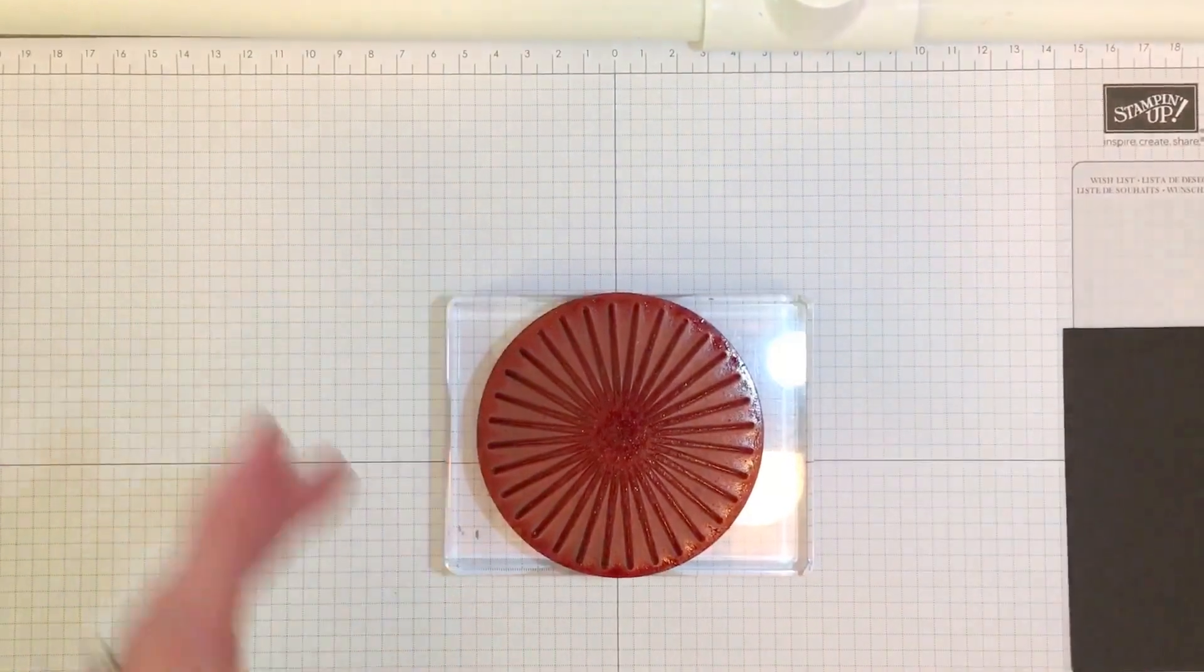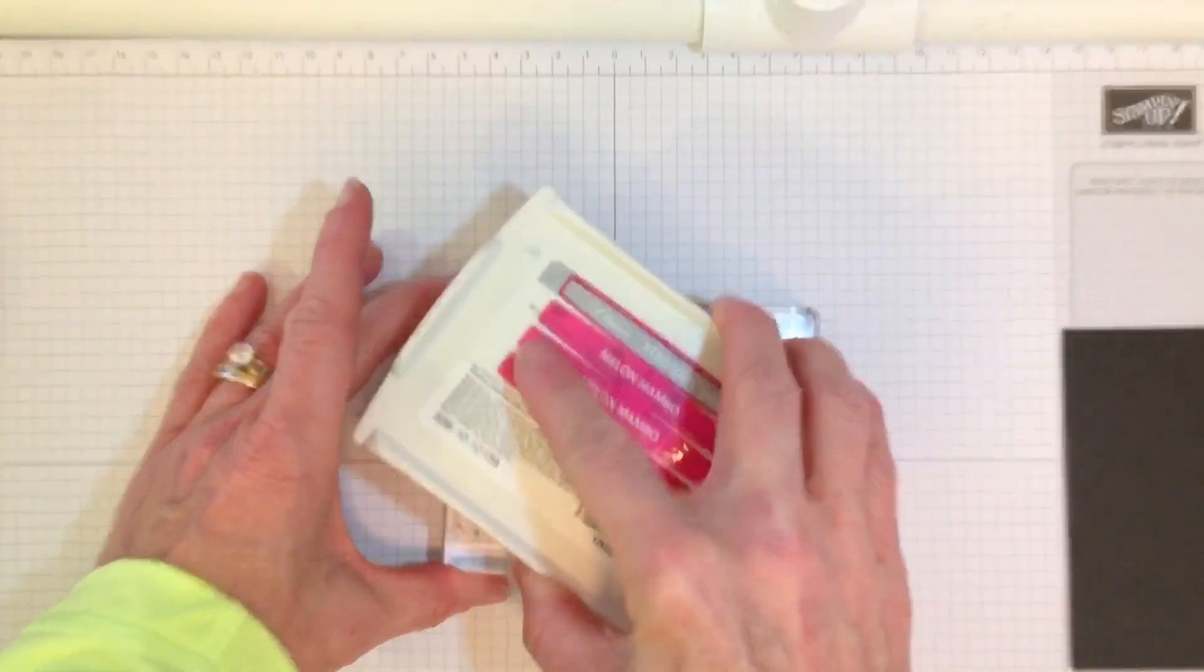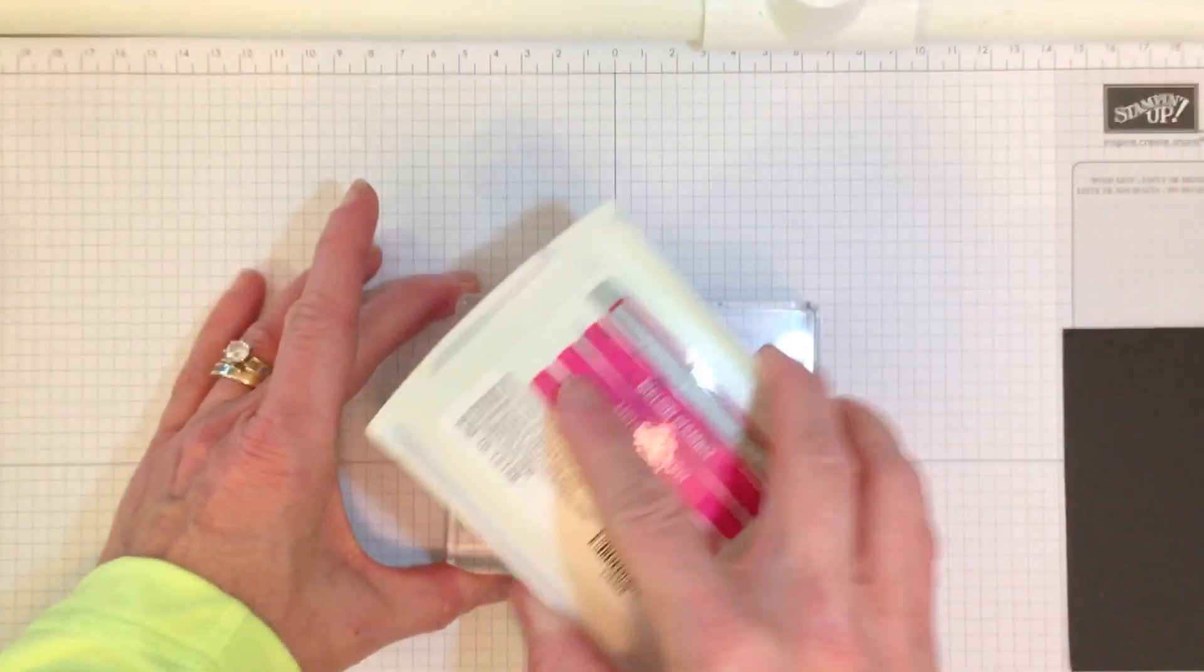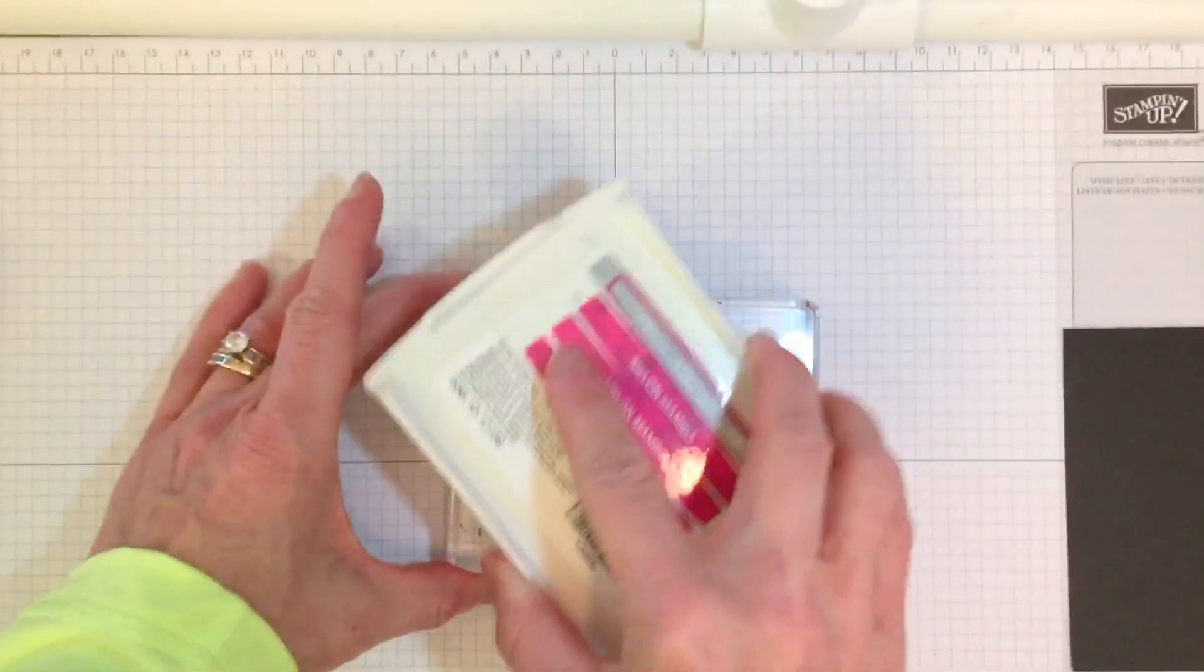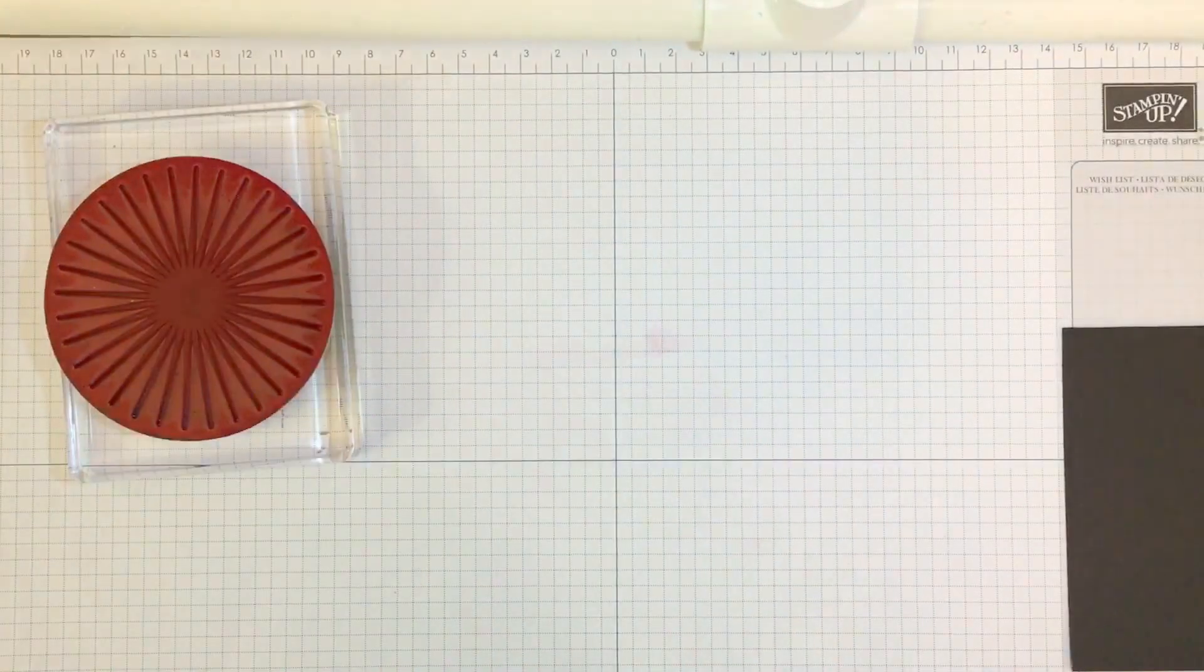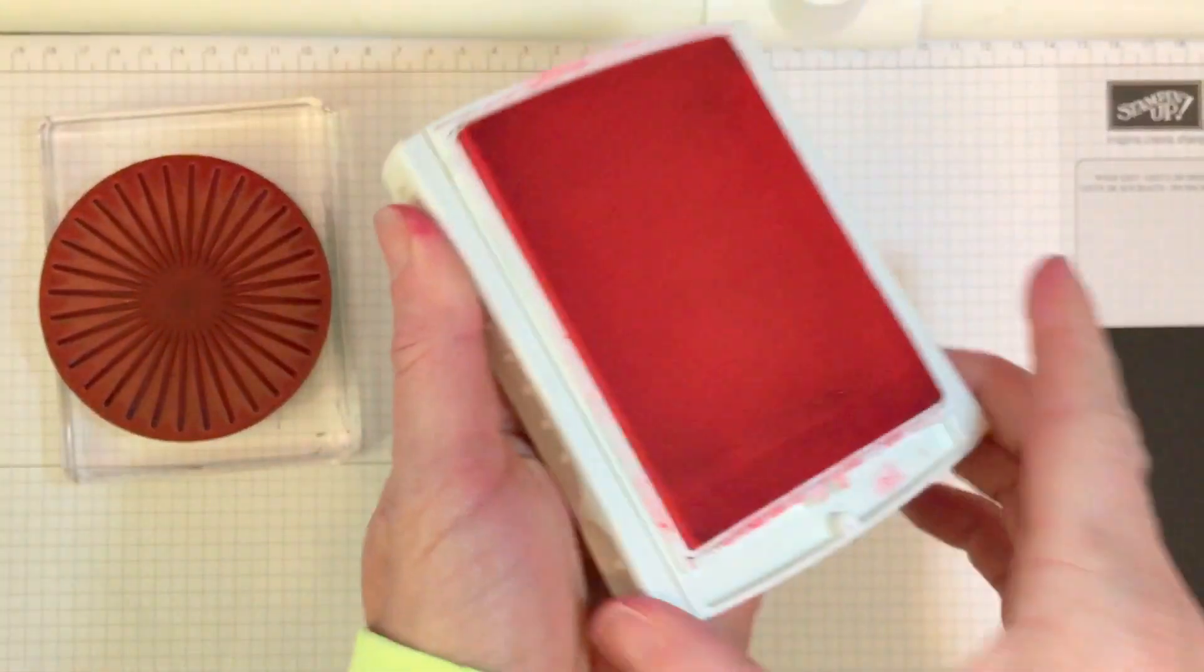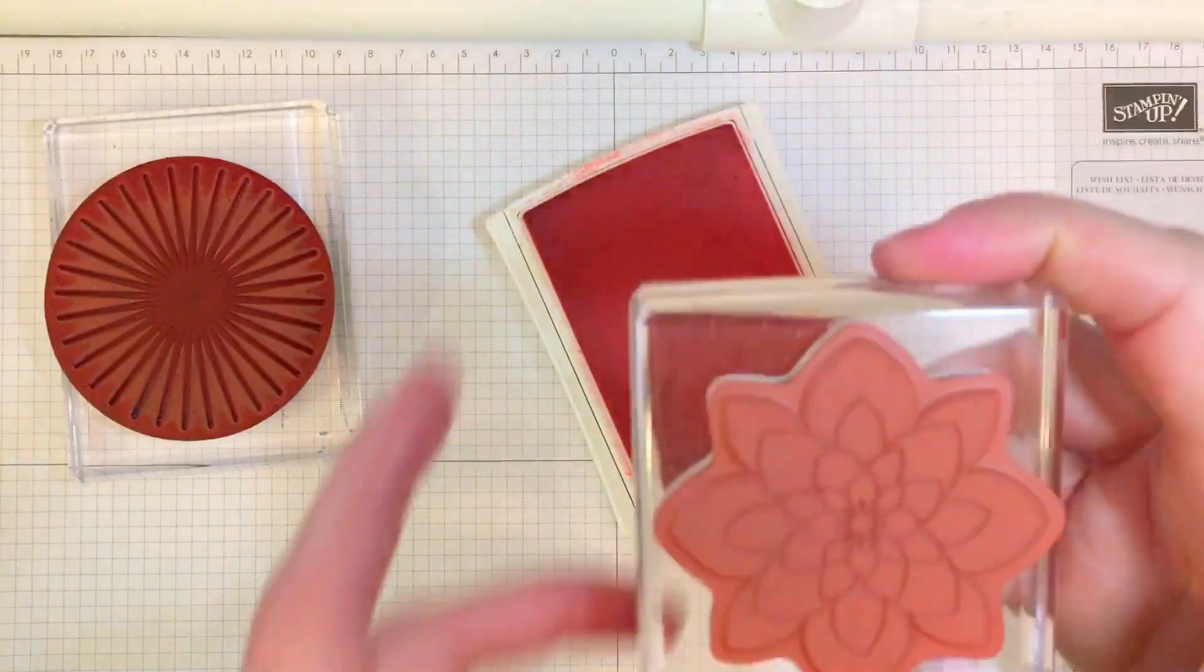So what I did was I took the medallion, and I'm going to ink it in the Melon Mambo. You ink it in the darker color, because a light ink will go onto a dark color, but a dark color will not work the opposite way. I'm going to take Flirty Flamingo, and here's my medallion.